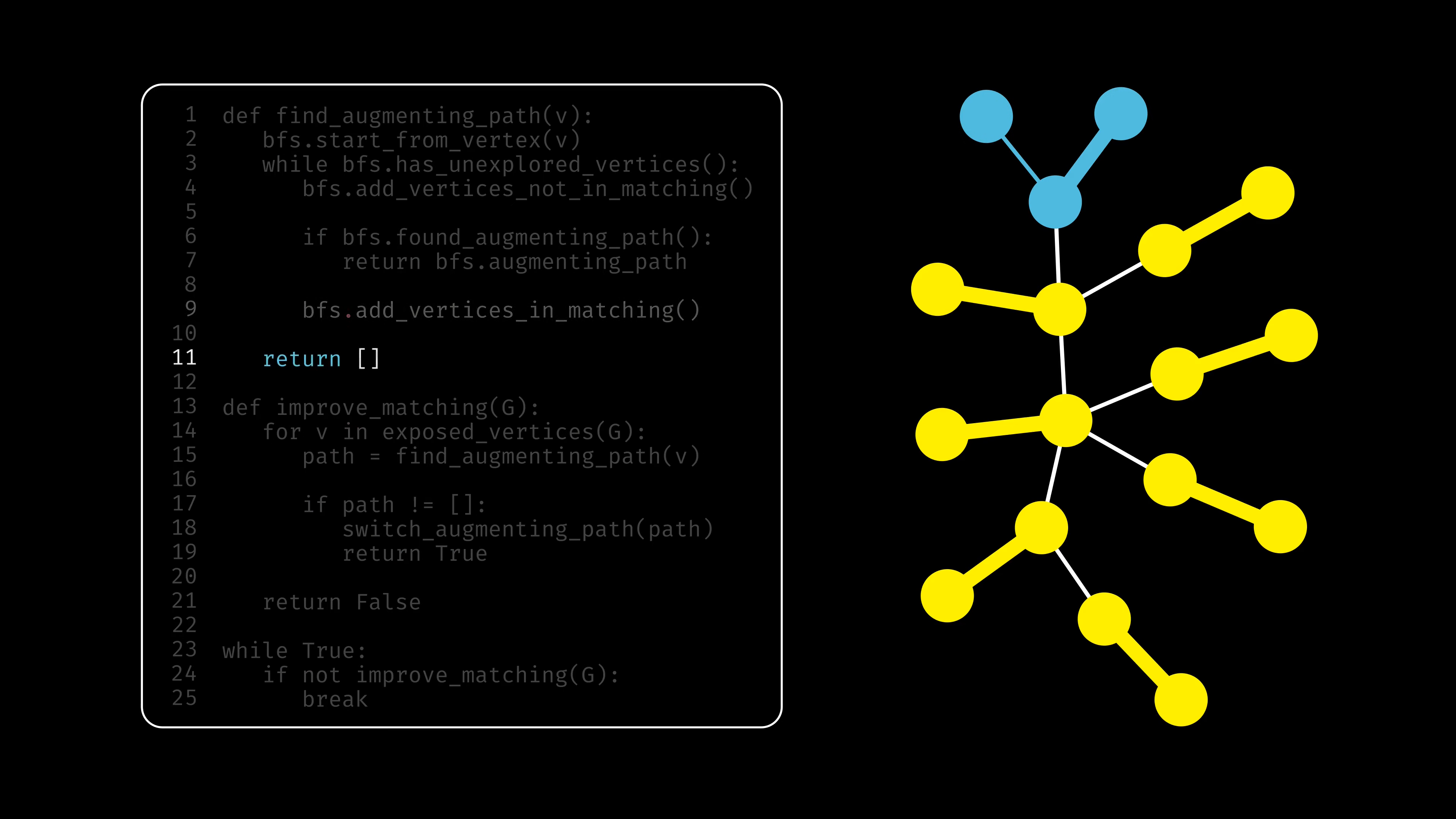Finally, once no augmenting path is found, the algorithm terminates. Although trees are a large family of graphs, we'd like our algorithm to work on all of them.